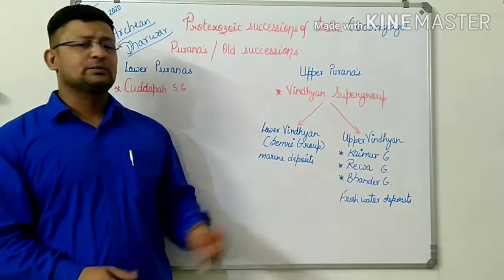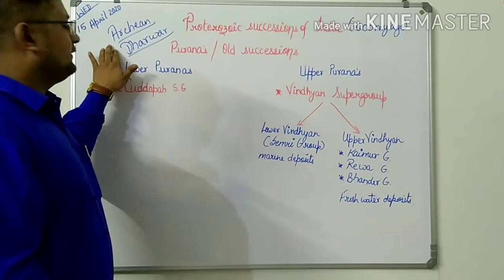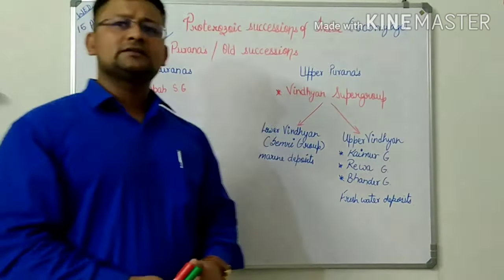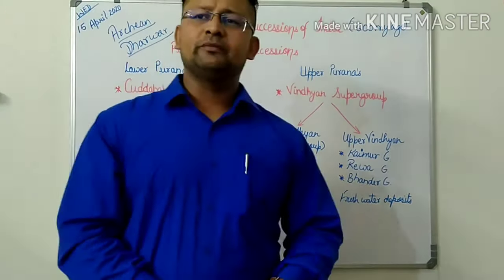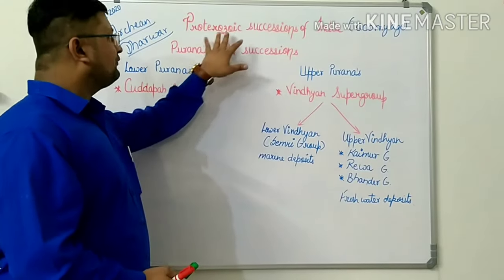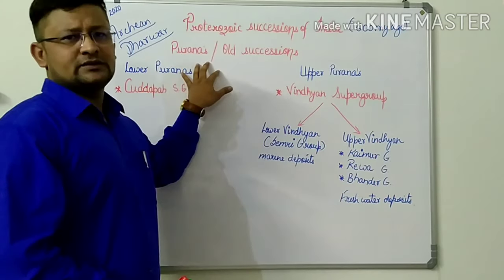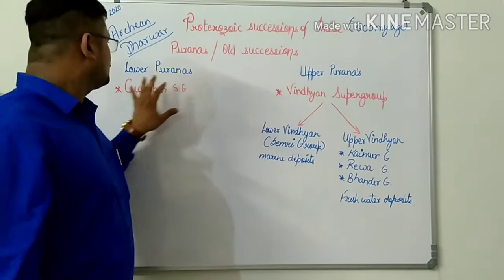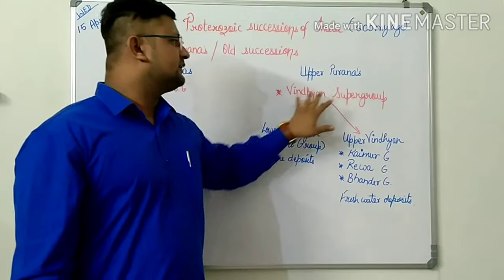Today we will be talking about the Vindhyan Supergroup. The first-formed sediments or rocks in India are of Archean age. The Archean rocks are overlain by Dharwar. Due to tectonic movement, the Dharwar rocks were folded and basins were created. In those basins, the Proterozoic succession of India was deposited, coinciding with the Purana formations — meaning 'old' — which is divided into lower Puranas and upper Puranas.